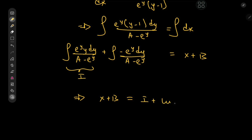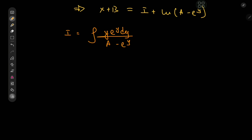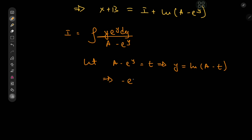So x plus b equals the integral I plus the logarithm of a minus e to the y. Our next target is the integral I. We make a substitution letting a minus e to the y equal t, which implies y equals log of a minus t. This further implies that negative e to the y dy equals dt.